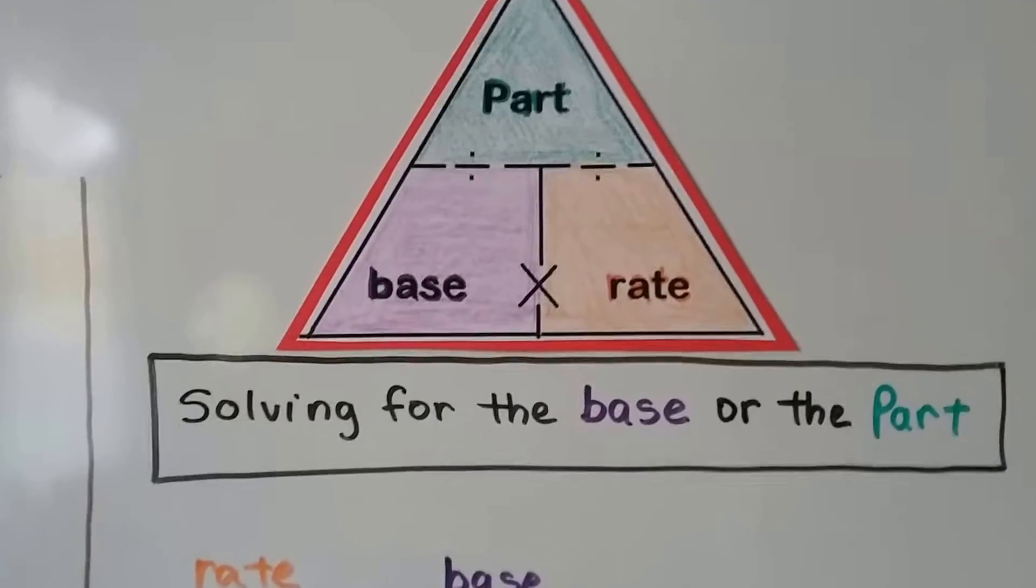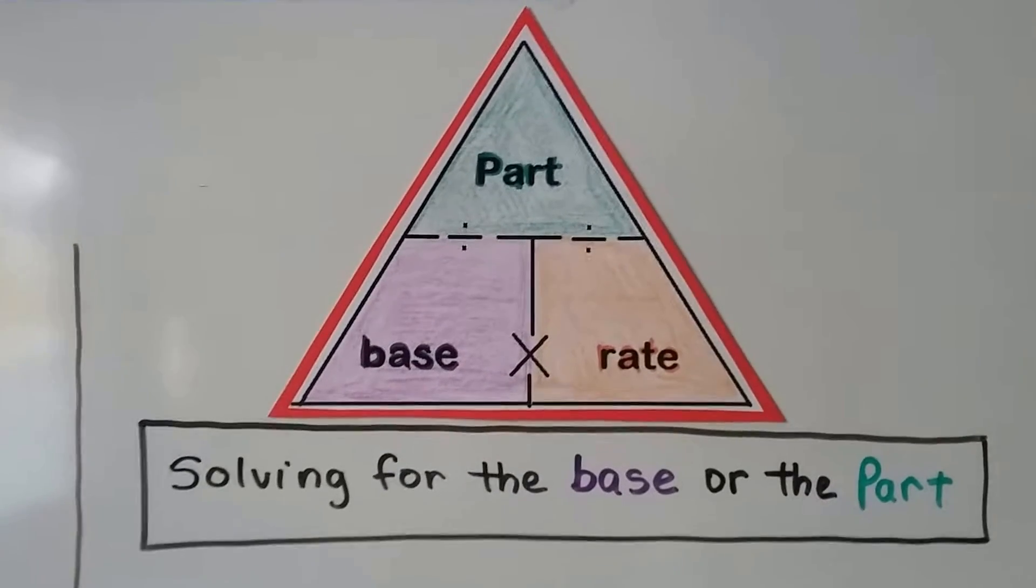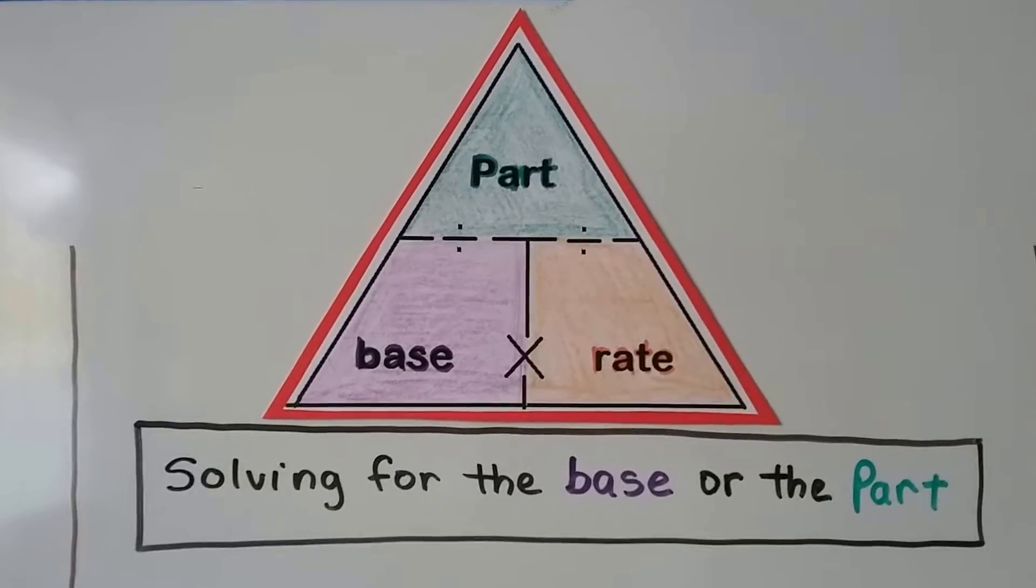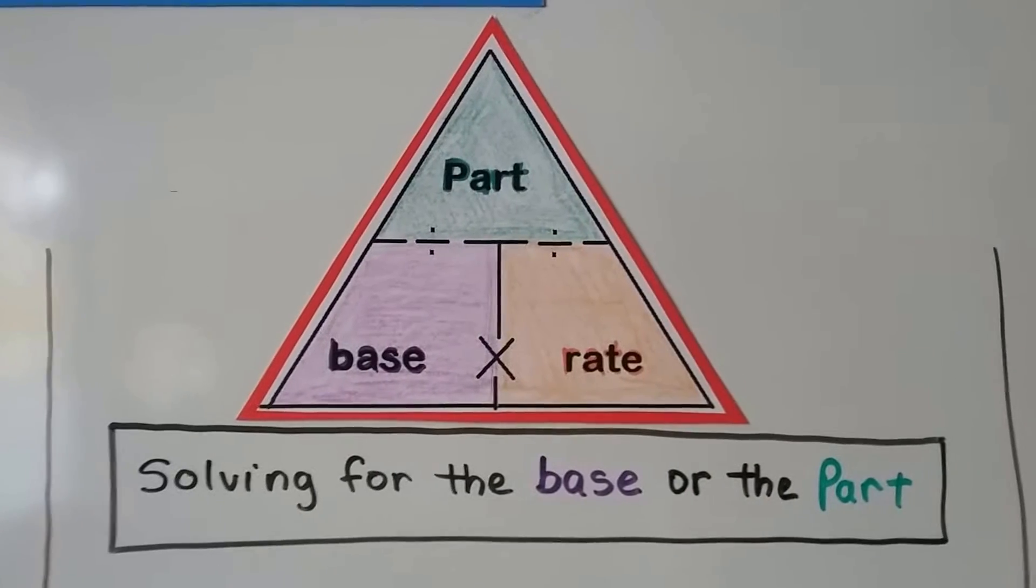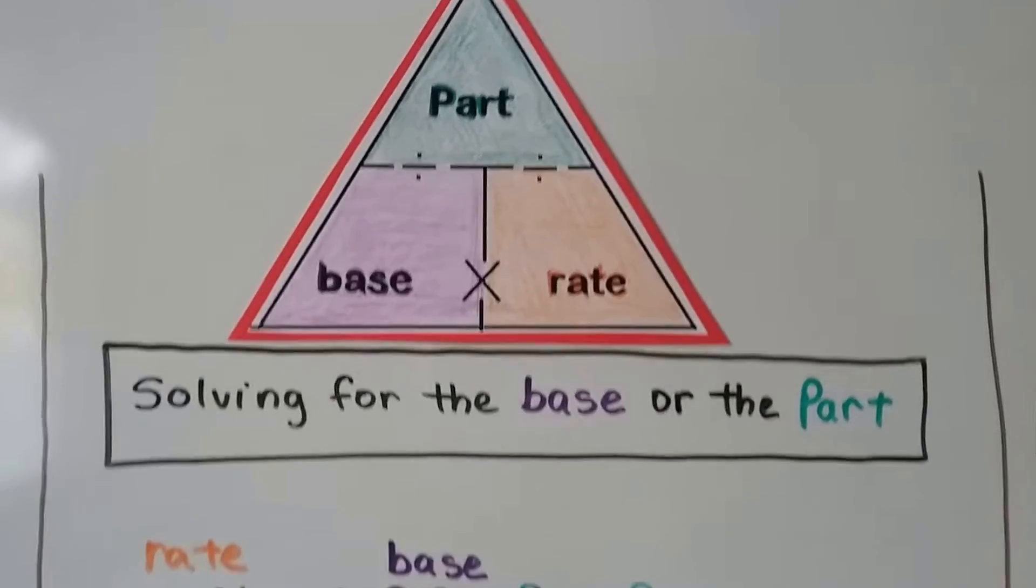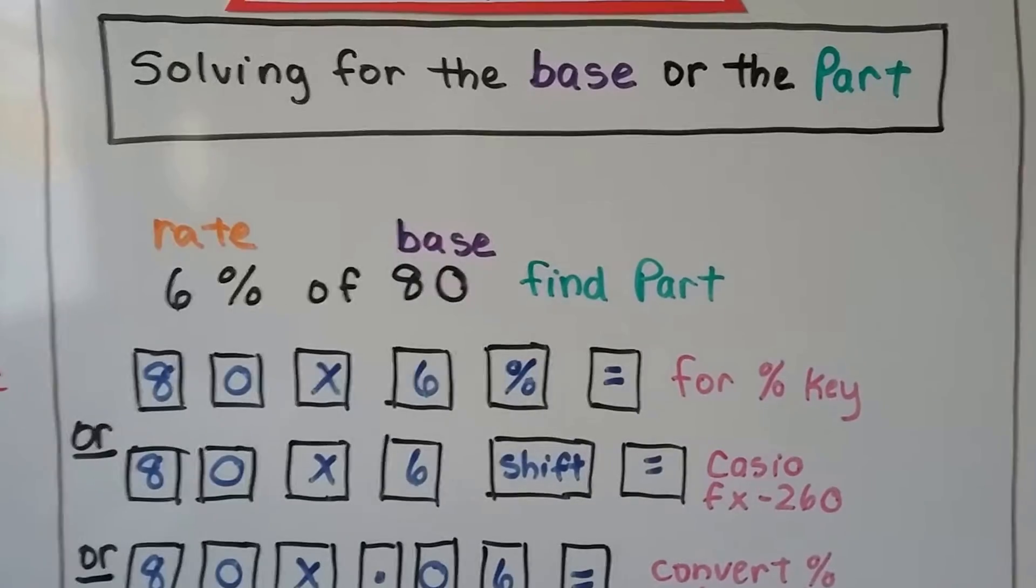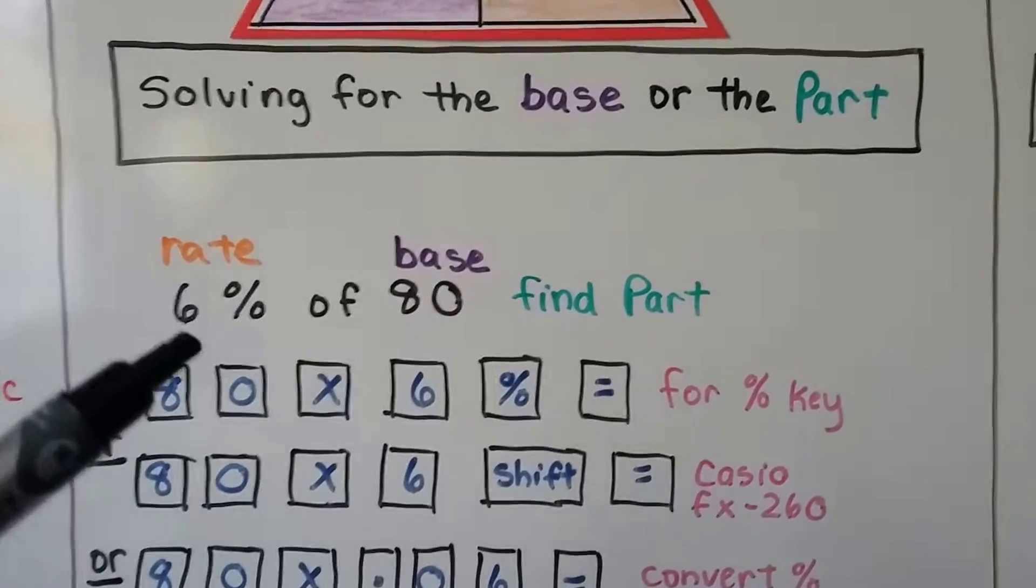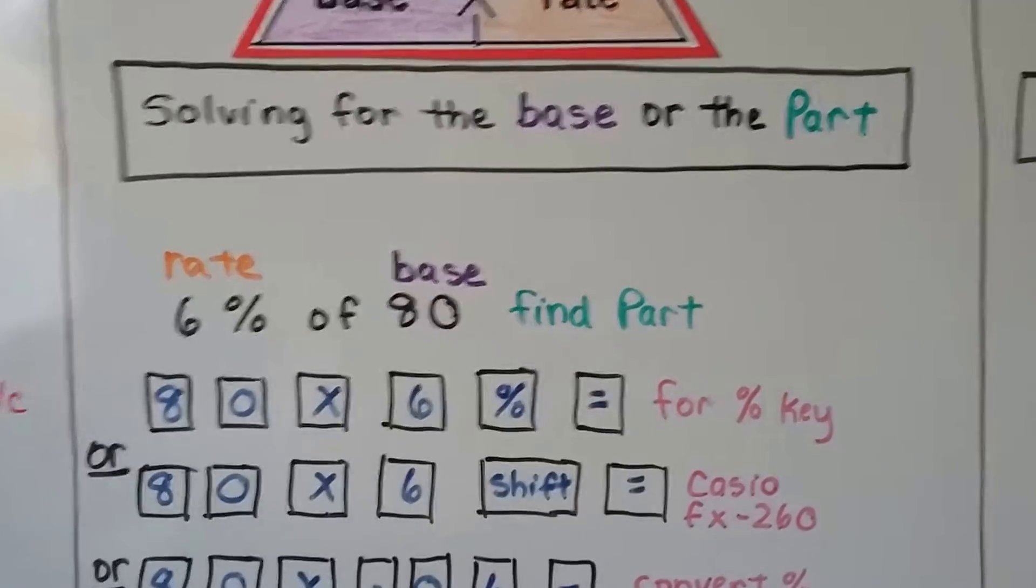So we've been working with this triangle. Part divided by base is going to give us the rate. Or part divided by rate is going to give us the base. Or base times rate is going to give us the part. If we're solving for the base or the part, it would be like this example. We have 6% of 80. That's the rate. And if it's of 80, that means that's the base. So we need to find the part.